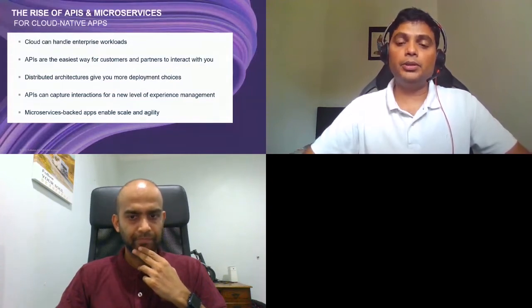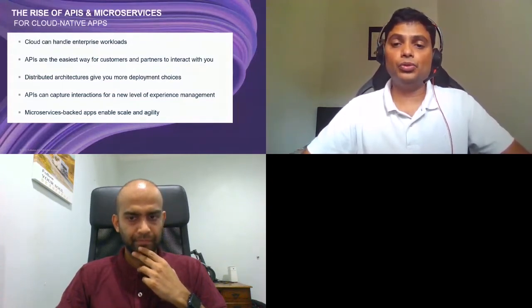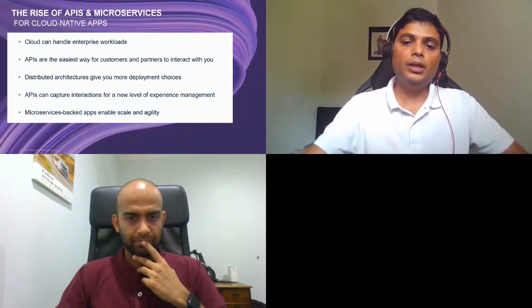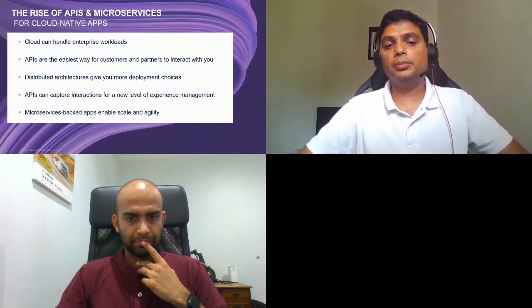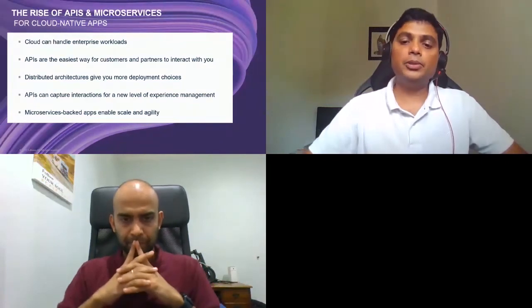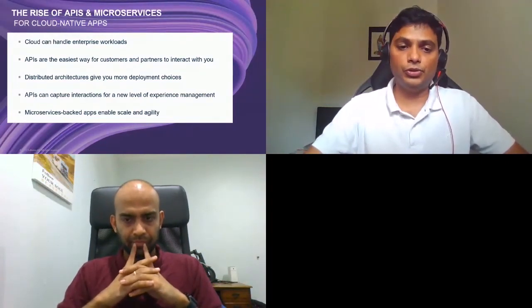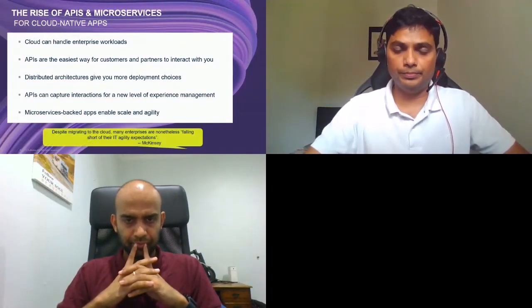The unpredictability of mobile and social demands means you need a more dynamic way to scale. Because APIs are delivered using one of many microservices behind the scenes, it's getting much easier and faster to change them.